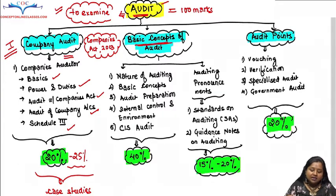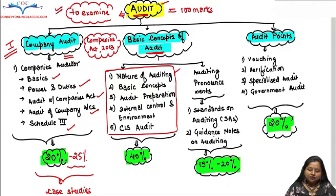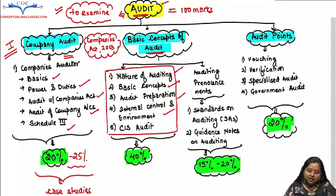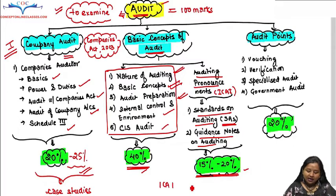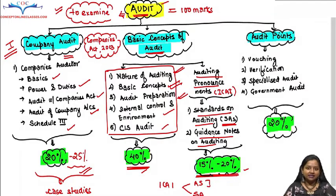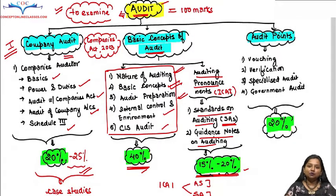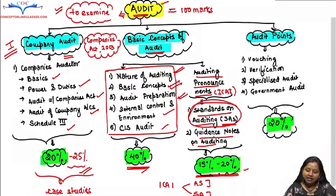The second part is Basic Concepts of Audit, which is further divided into two parts. In the first sub-part we will cover basics: nature of auditing, audit preparation, internal control, CIS audit, and so on. In the second sub-part we will look at auditing pronouncements – standards issued by ICAI (Institute of Chartered Accountants of India). ICAI issues two kinds of standards: Accounting Standards (AS), which give guidelines on how books of accounts are prepared and the treatment of various items; and Standards of Auditing (SA), which give instructions to the auditor on how to examine those books.